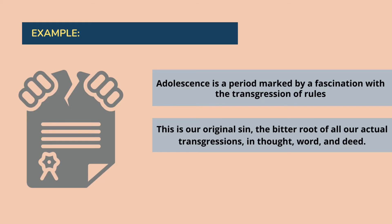The examples are: 'Adolescence is a period marked by a fascination with the transgression of rules' — in adolescence, most children show offense against rules and find this fascinating. And: 'This is our original sin, the bitter root of all of our actual transgressions in thought, words, and deed.'